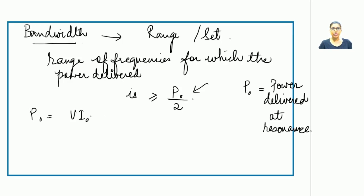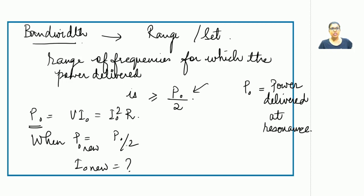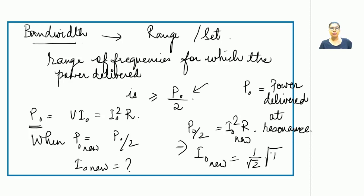P₀ = I₀²·R. When the power becomes P₀/2, substituting into the expression gives I₀_new = (1/√2)·√(P₀/R). Since √(P₀/R) is the original I₀, when the power becomes P₀/2 the new current becomes (1/√2) times the resonant current I₀. Knowing this relationship between power and current allows us to draw a resonance curve and study bandwidth in detail.